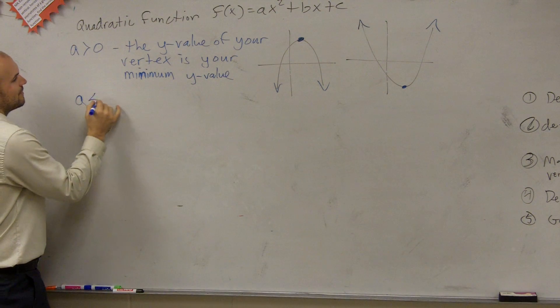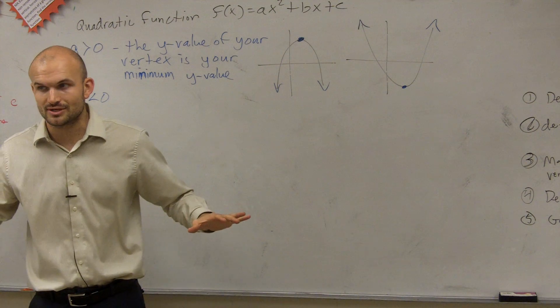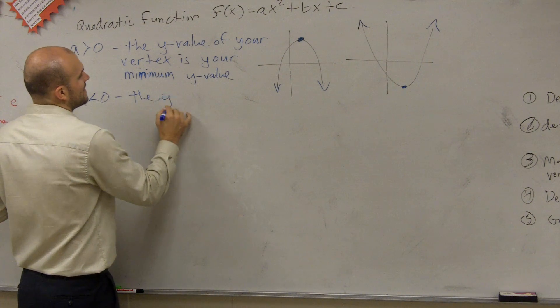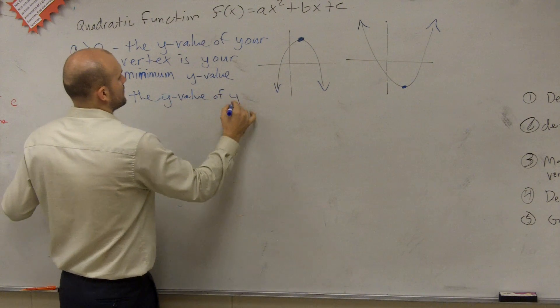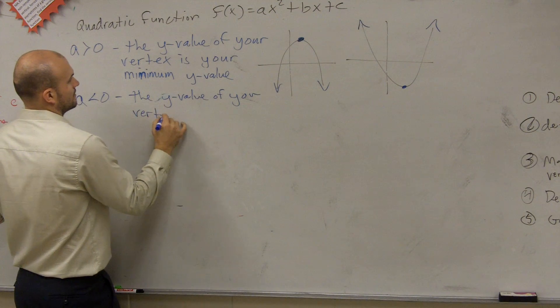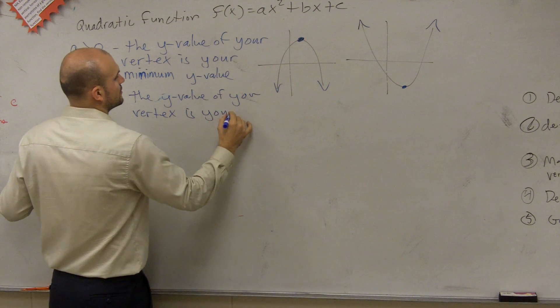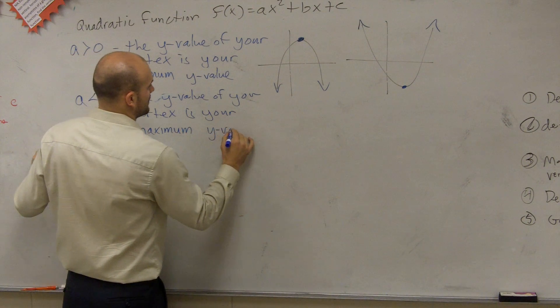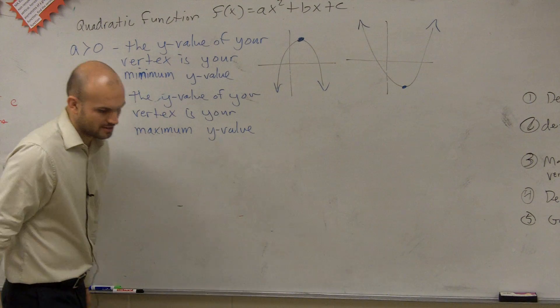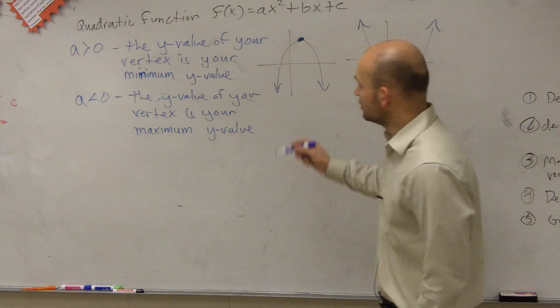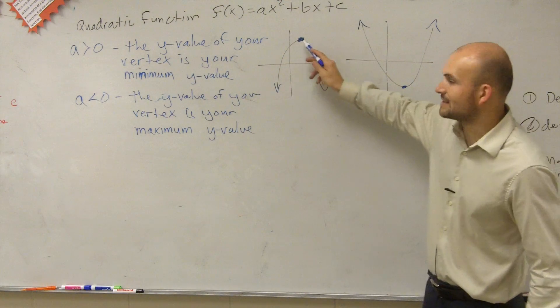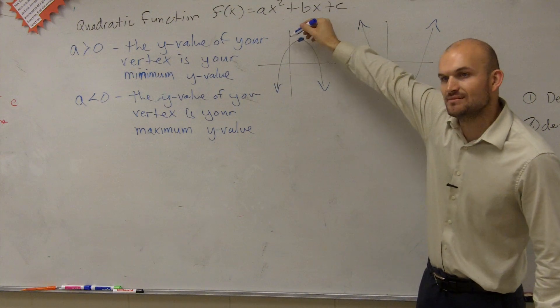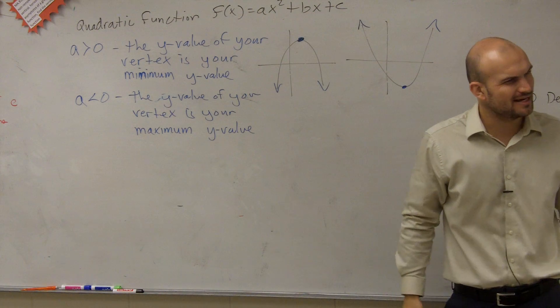And then let's take a look at it. What about if a was less than 0? Remember, a cannot equal 0. But if a was less than 0, then the y value of your vertex is your maximum y value of your parabola. So if you look at it, if a was less than 0, what that means is now your parabola is going to open down. And the y value is going to be the maximum y value of the parabola.